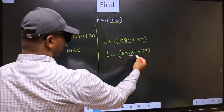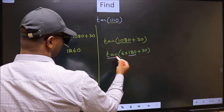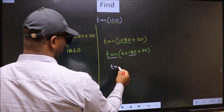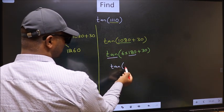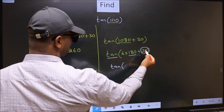Here we have 180. So tan is not going to change. It will remain tan. And inside, we get this angle 30.